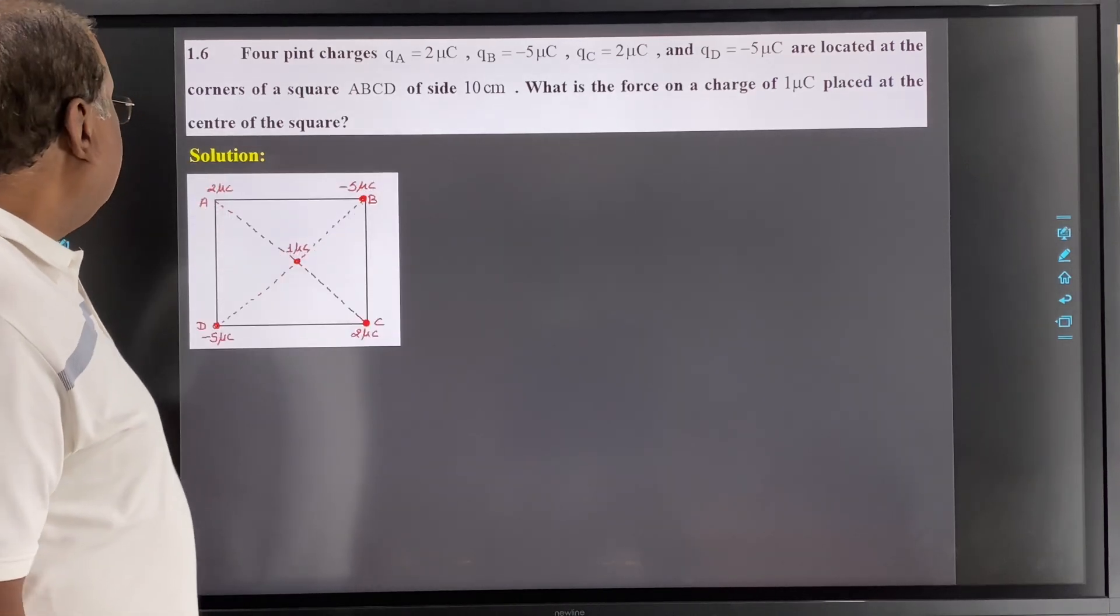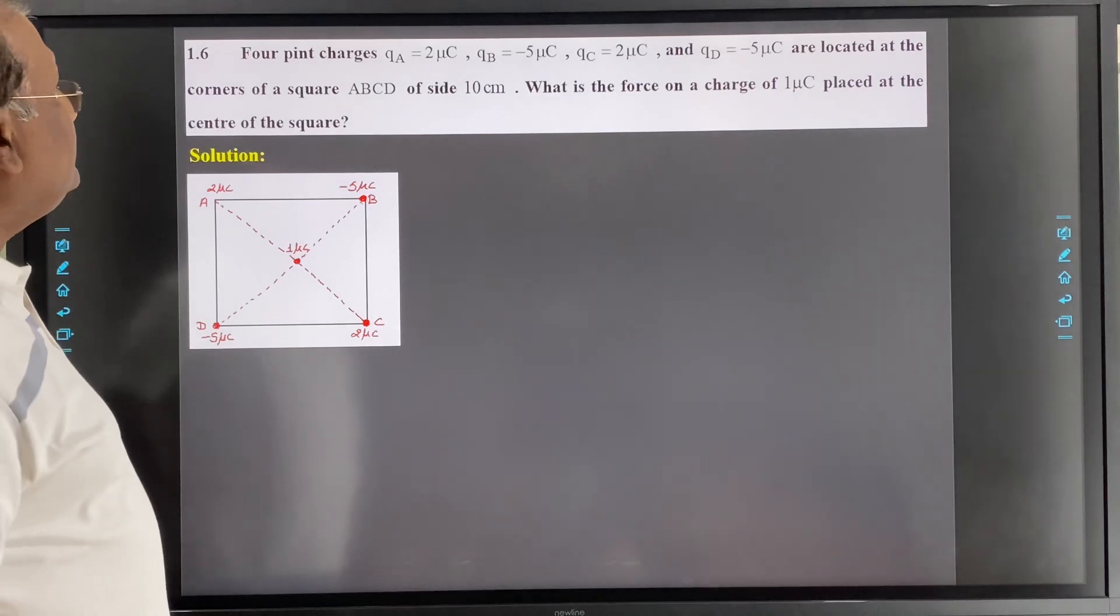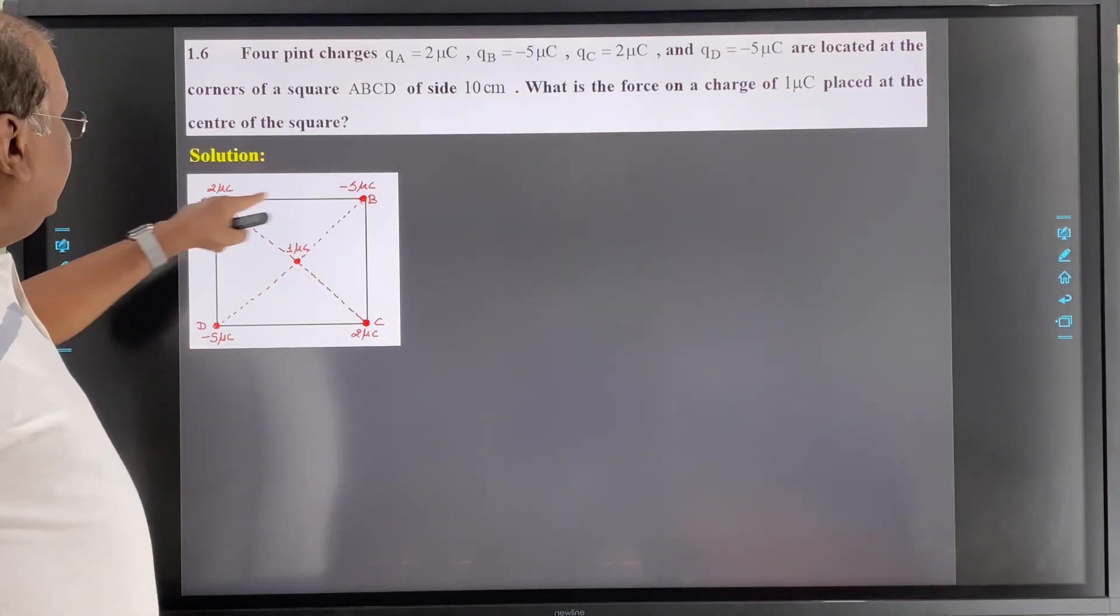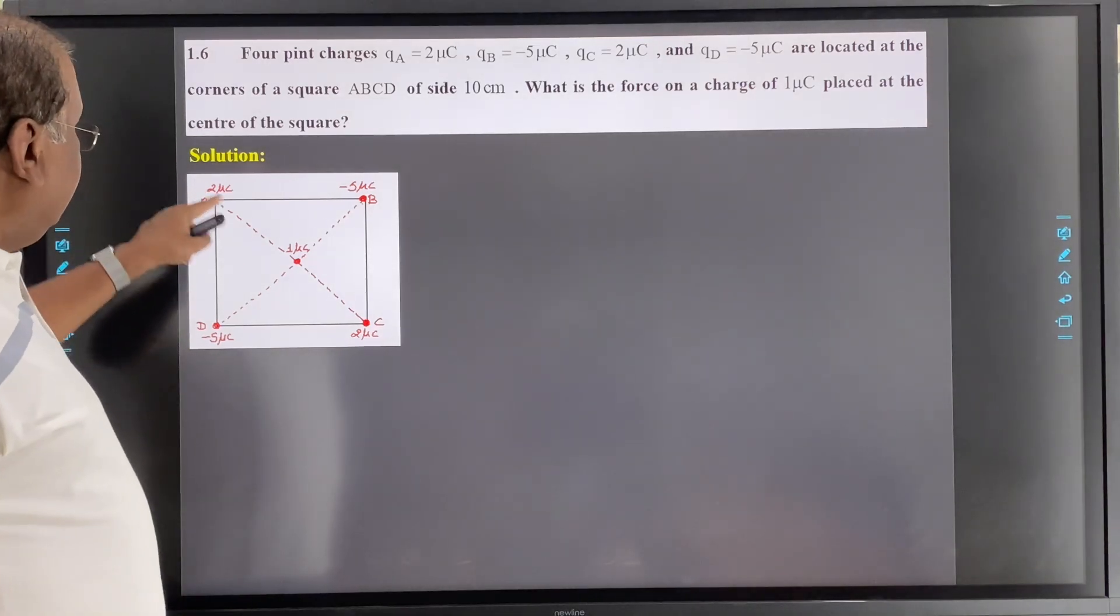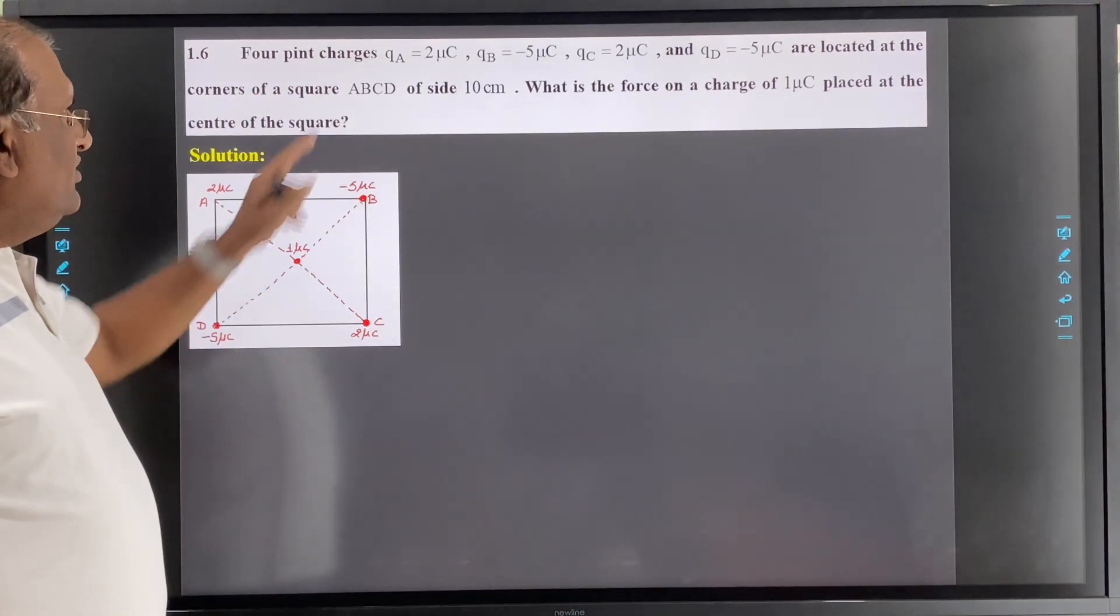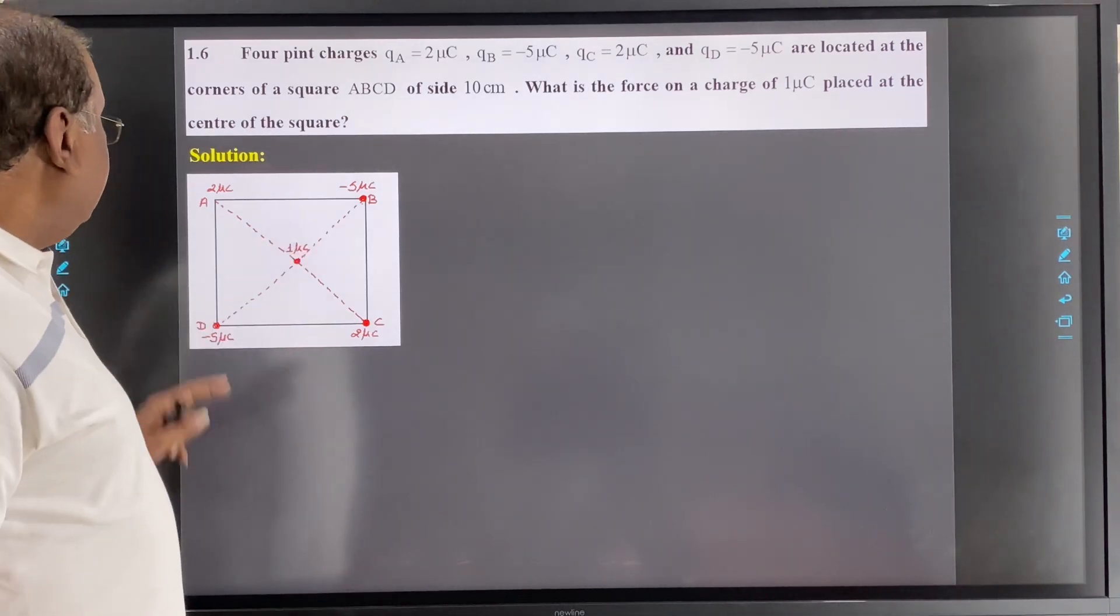And we have to keep these four charges respectively to ABCD. So A, B, C, D arrange this. So A and C, 2 micro coulomb, 2 micro coulomb charge